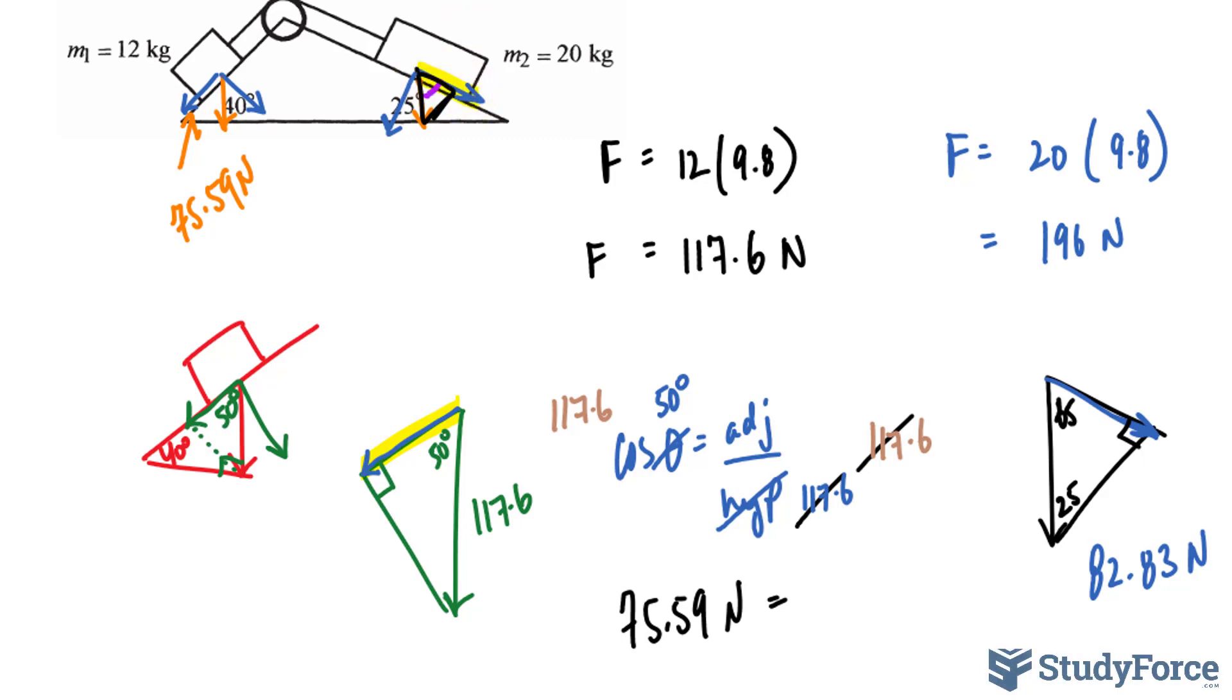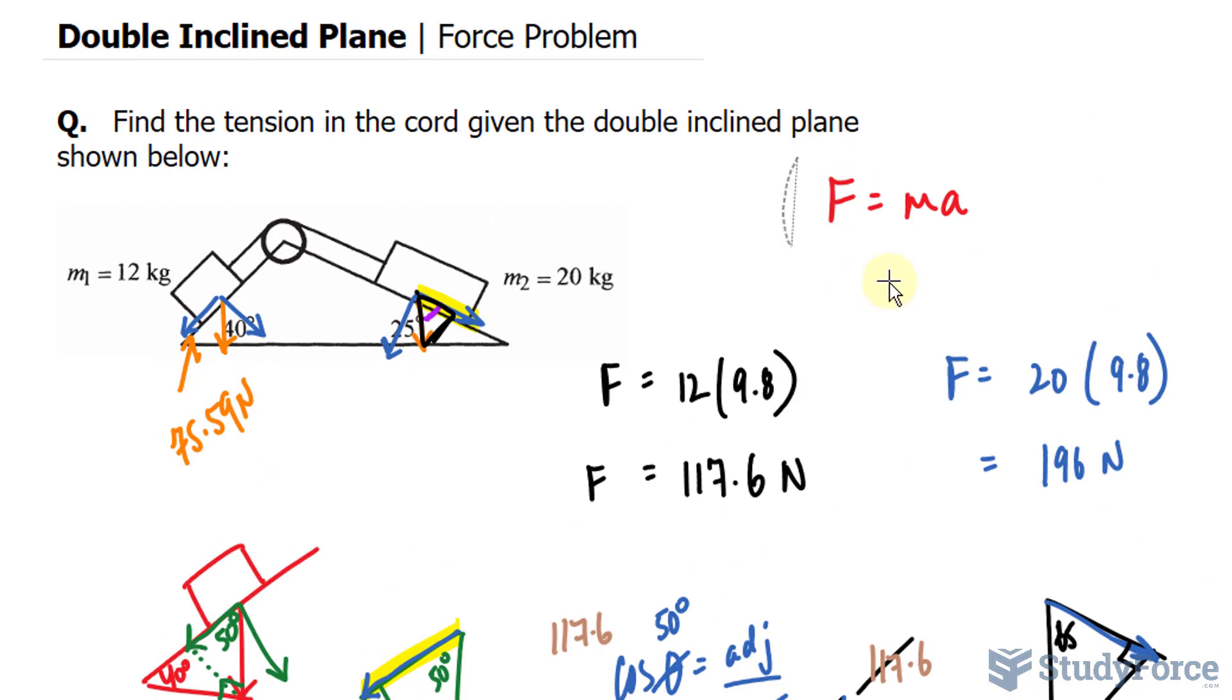Now, since these two masses are connected, we have to create two equations to find out the tension. At this point, you have to make an assumption as to where the masses will go, whether it be this way or that way. I'm going to make the assumption that it will be this way. And if you make the assumption going that way, then your equations will look like this. Whereas if you make the assumption of them going this way, you'll still get the same answer. But the equations that you create will be a little different. So, again, I'm going to make the assumption that it is going clockwise.